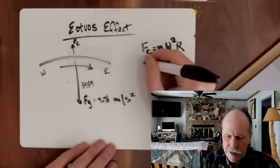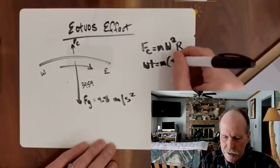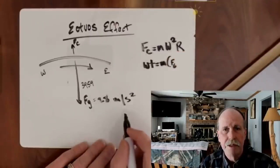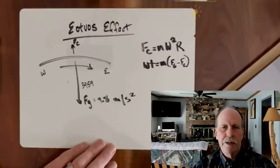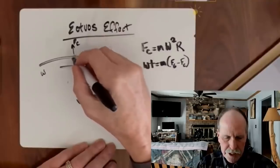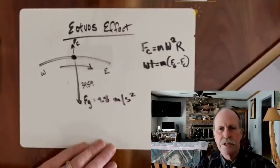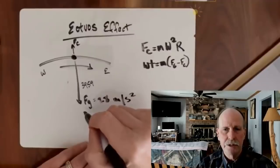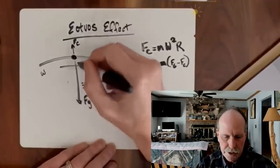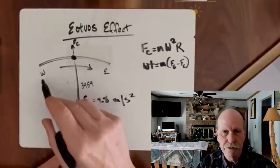Another term we have to define is weight. Weight equals the mass times the force of gravity — 9.8 meters per second squared — minus the centrifugal force. Now let's talk about what the Eötvös Effect is. The Eötvös Effect says that when you are an object stationary on the surface of the Earth, you have two forces acting on you that determine your weight. The first is gravity pulling you downward. The second is centrifugal force pulling you upward, because there is a baseline rotational speed of the Earth — and again, it goes from west to east.